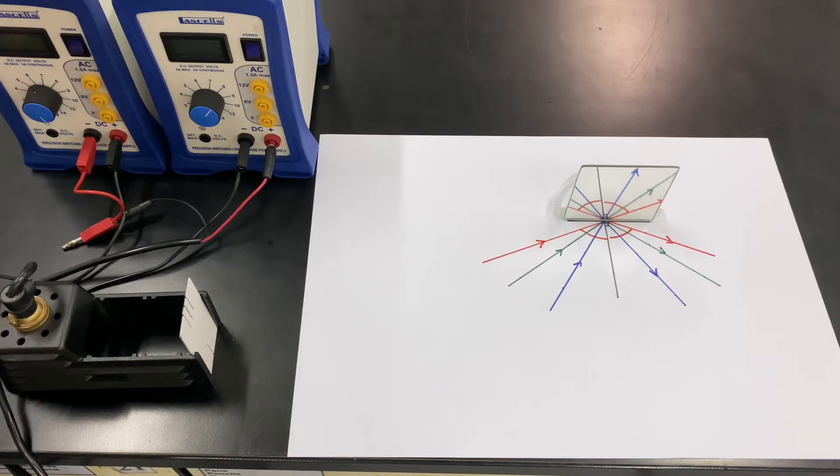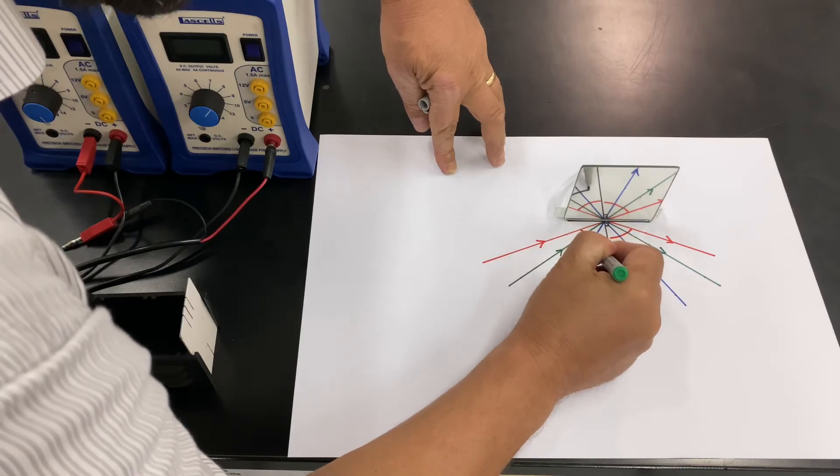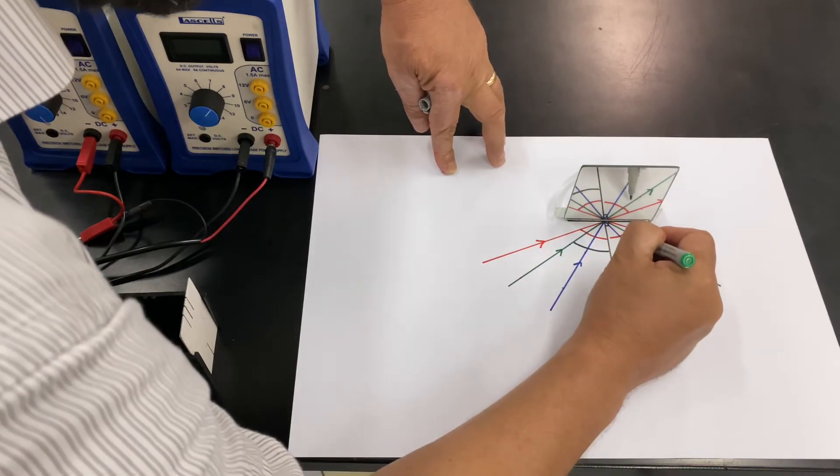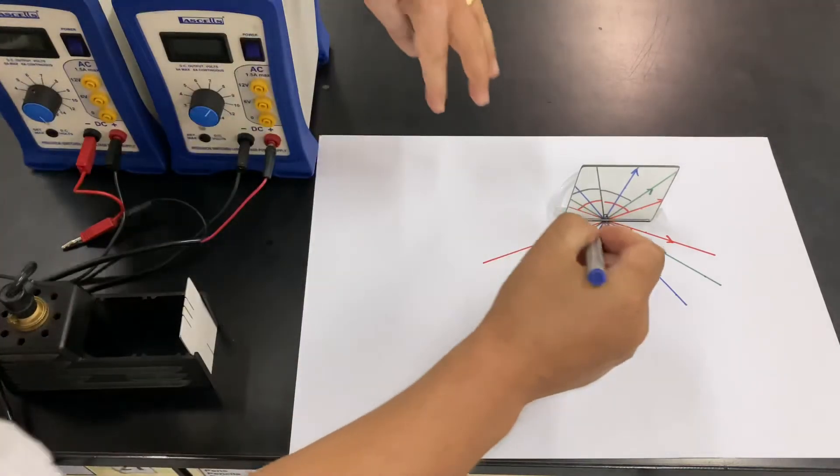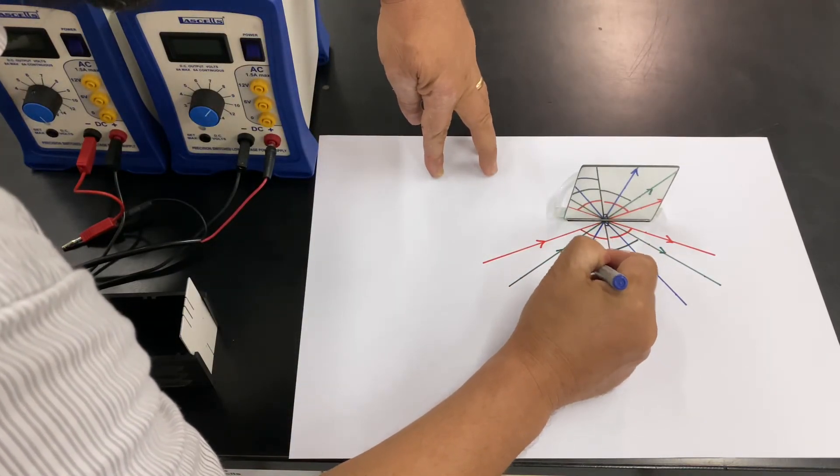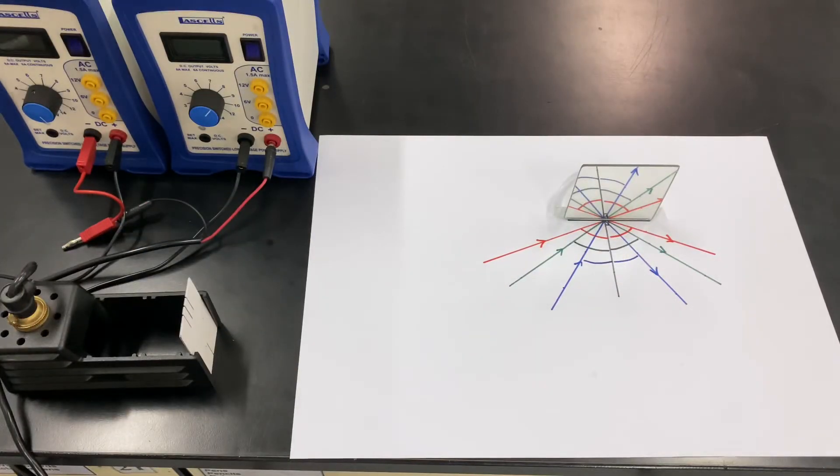Hopefully you can see there they're the same. So for our green, this was our angle of incidence, and this was our angle of reflection. And then finally for the blue, this was our angle of incidence, this was our angle of reflection.